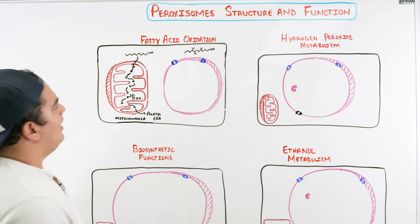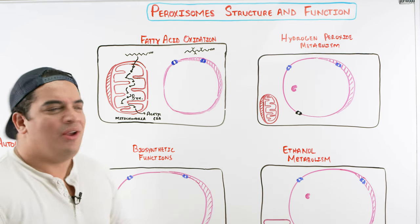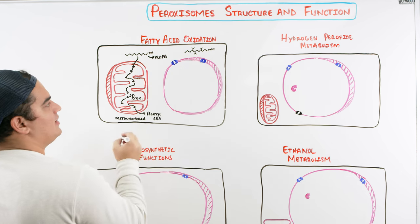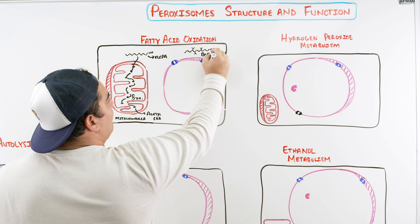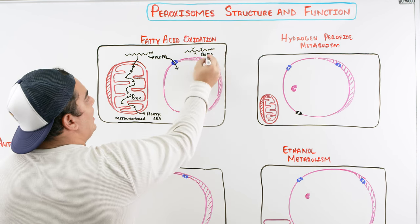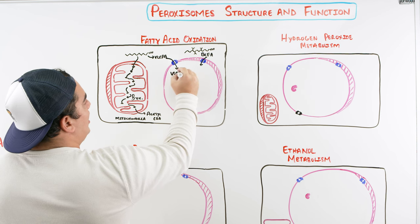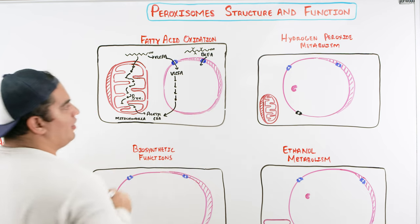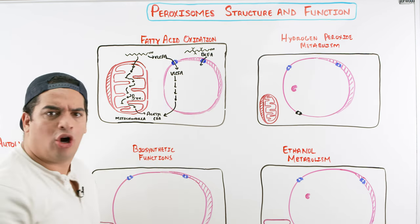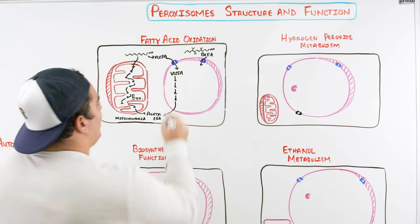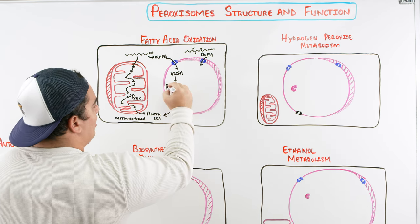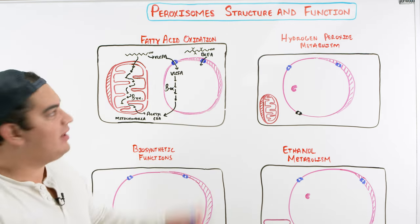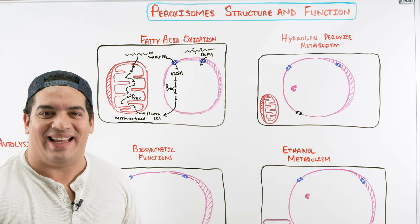The same thing can happen in peroxisomes, but in peroxisomes these are called very long chain fatty acids. Over here we also have branched chain fatty acids — these get taken into peroxisomes. The very long chain fatty acids go through the same kind of process where they'll make acetyl-CoA, breaking them down into two carbon chains at a time. This process is also called beta oxidation, and it can occur in both the mitochondria and the peroxisomes.